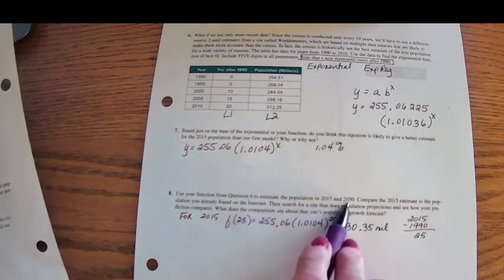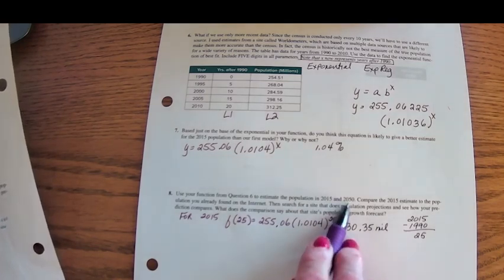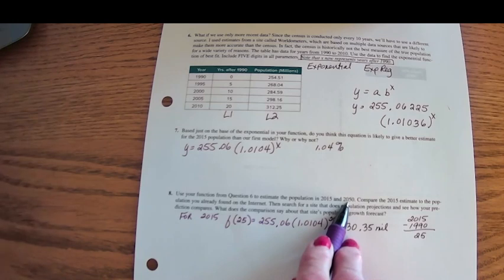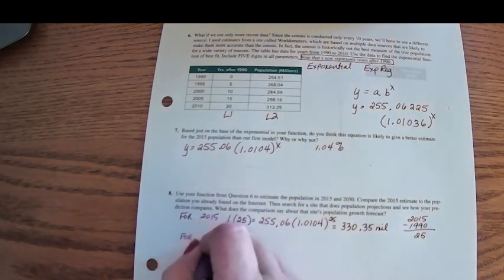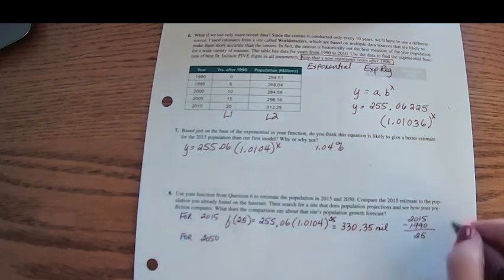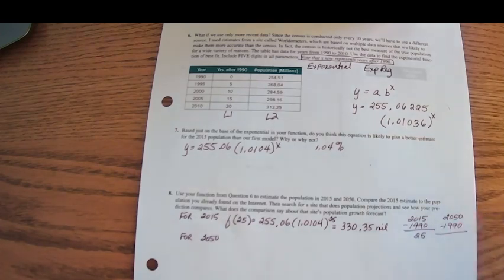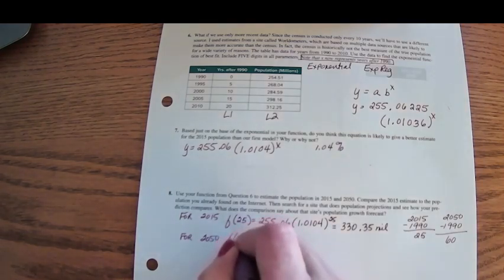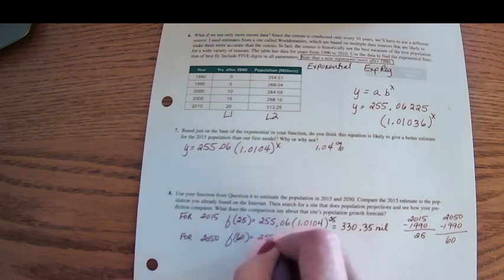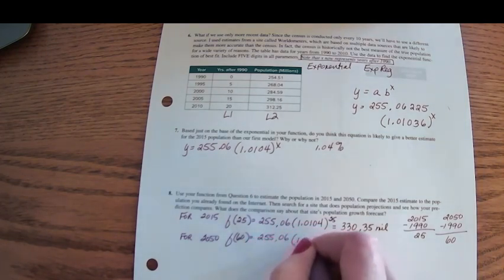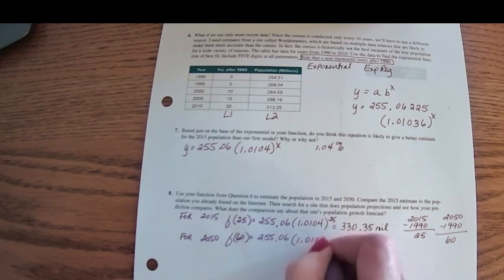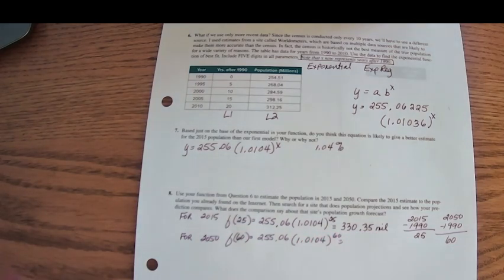Now they want us to figure out, use our model to find what we're going to predict the population will be in 2050. So for the year 2050, first of all, we need to know how many years that is since the year 1990. So that's 60 years.